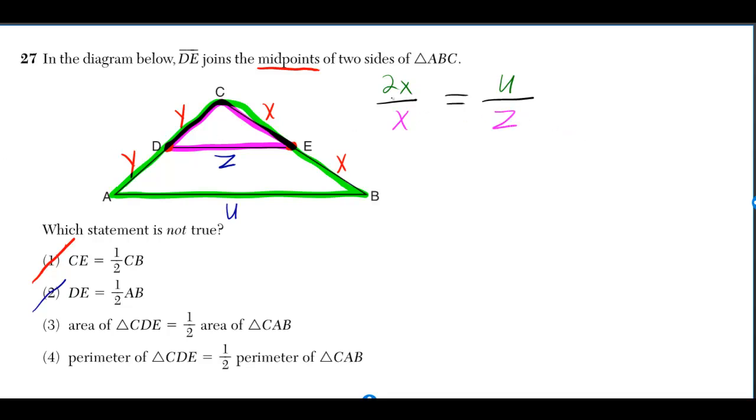We can set up a proportion by saying that 2X goes with X in the same way that U goes with Z. The X's cancel, and if you multiply by Z, you get U is equal to 2Z. So I can replace U with 2Z over here.